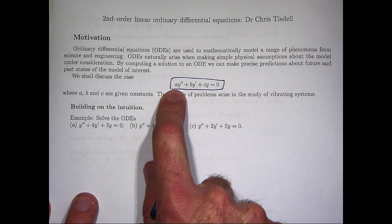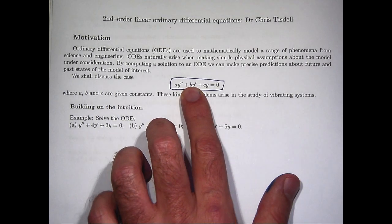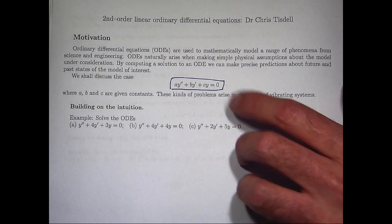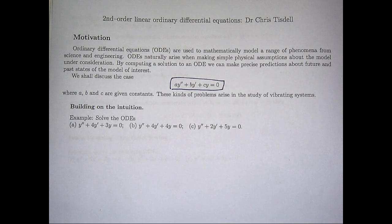The a here is the mass in your spring mass system. The b is the damping constant. So a large and positive value of b would mean that you'd have a very thick oil that would effectively damp your system. And the c here is the spring constant. So a large and positive value of c would mean a stiff spring.